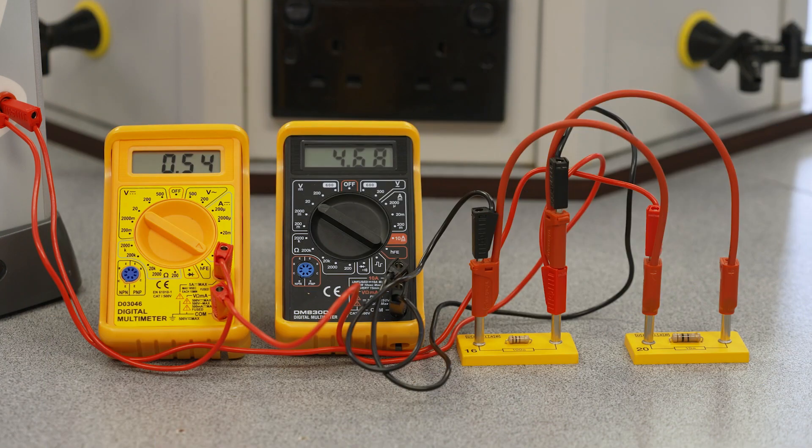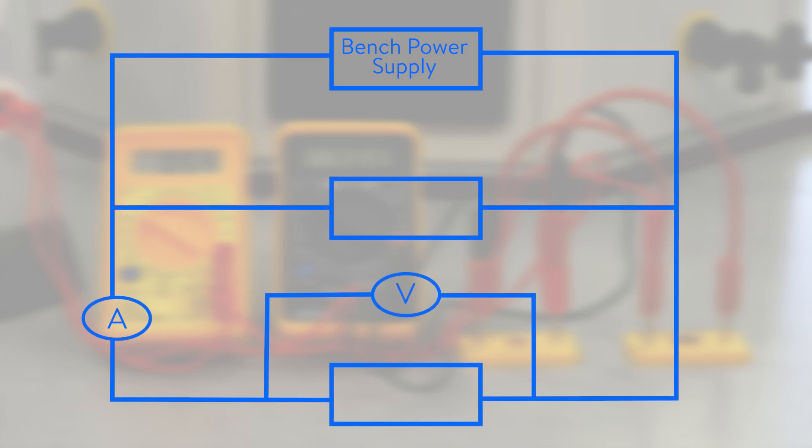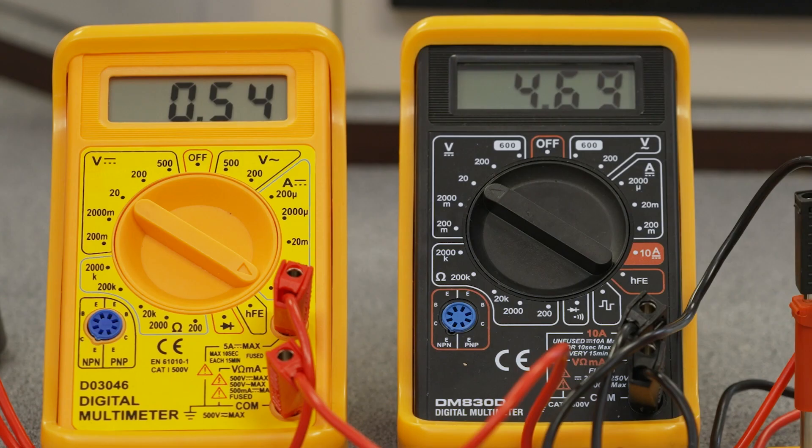The next step is to connect the resistors in parallel to each other as follows. Again, record the values of the readings on the ammeter and voltmeter and calculate the total resistance of both the resistors when they're connected in parallel.